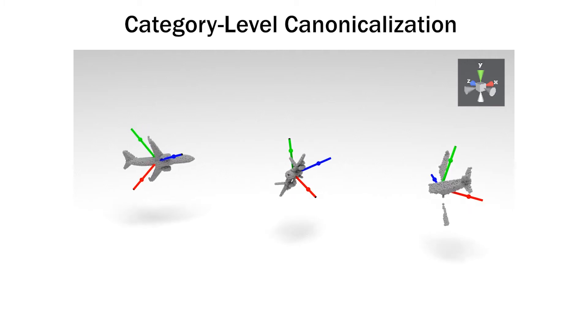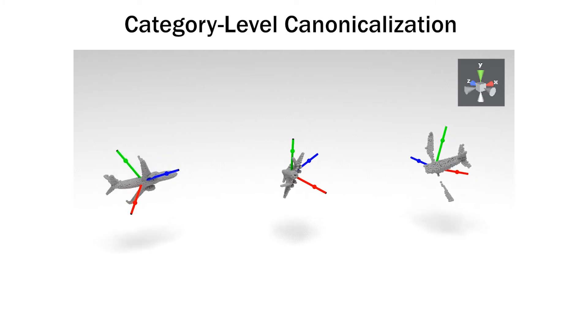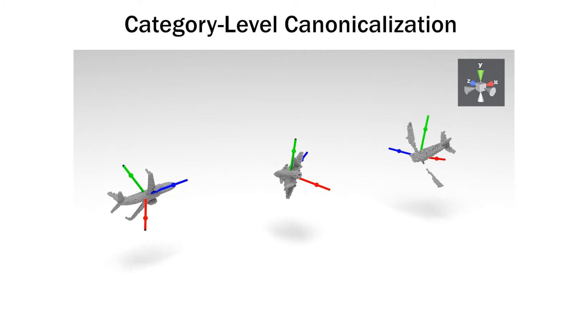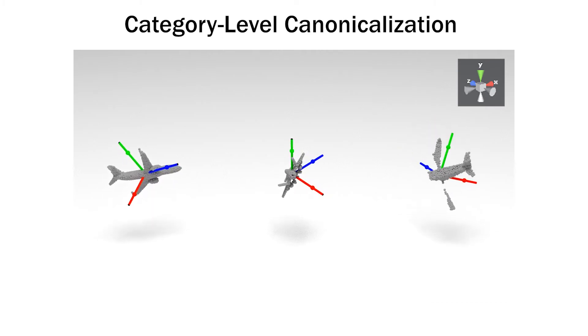In category-level 3D pose canonicalization, we want a canonical frame that is consistent with respect to the geometry and local shape across different objects of the same category, as shown here.